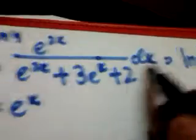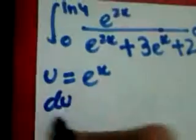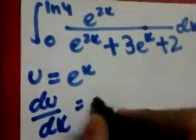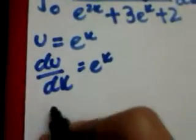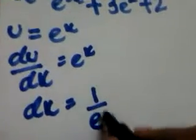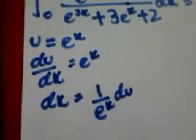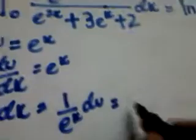Let's first replace dx with du. If we differentiate u = e^x, we get du/dx equals e to the power x. Therefore, dx is going to be 1 over e^x du — multiplying dx on both sides and dividing by e^x on both sides. But since e to the power x is u, this becomes 1/u du. So instead of dx, we can write this term.